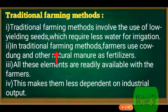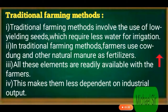Second: In Traditional Farming Methods, farmers use cow dung and other natural manure as fertilizers. Traditional Farming Methods में farmers cow dung को use करते हैं और उसके अलावा प्राकृतिक खाद को use करते हैं — भूमि को उपजाऊ बनाने के लिए।